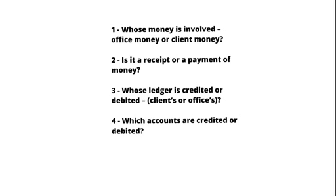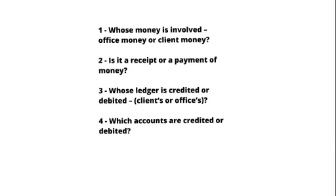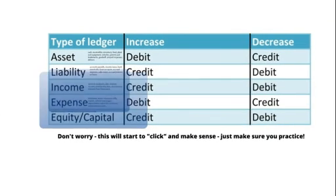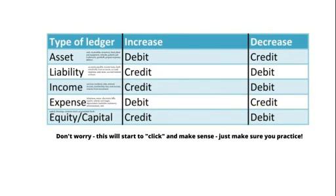When identifying which accounts to credit or debit, you need to identify whether a transaction involves additions or reductions to an asset, liability, income, expense or equity/capital account. This table, also in your textbook, will help you work out which ledger accounts require the appropriate entries in any given transaction.